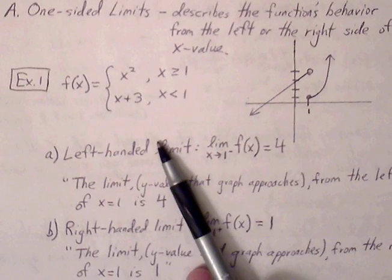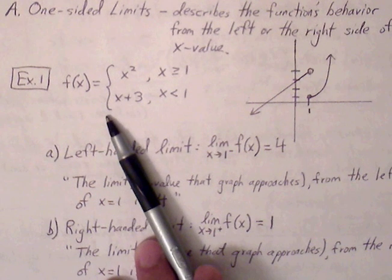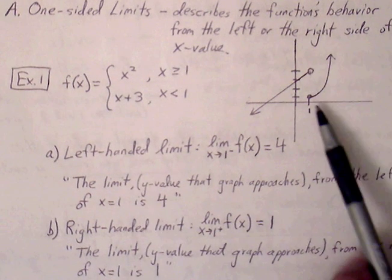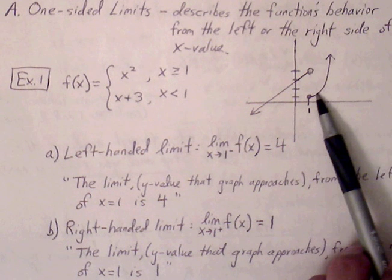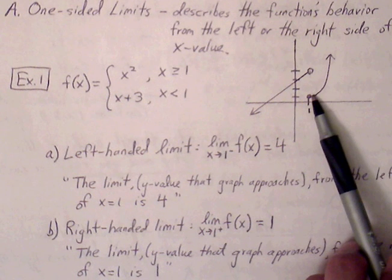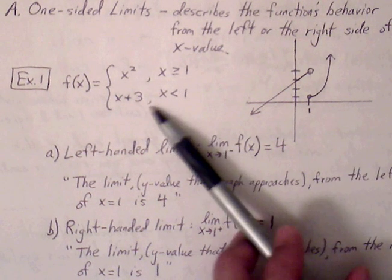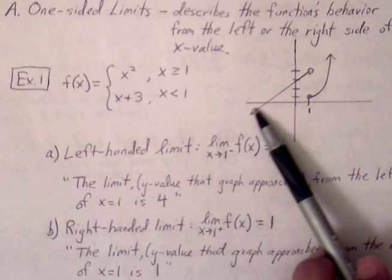For example 1, we have a piecewise function: y equals x squared where x is greater than or equal to 1, and y equals x plus 3, which is the linear function to the left of 1.